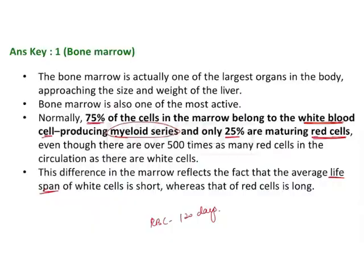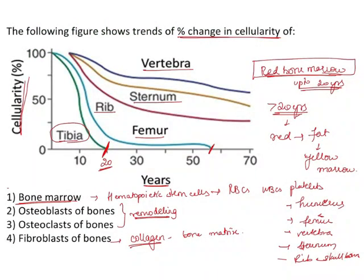Therefore, the right answer is bone marrow — it depicts the change in cellularity of the bone marrow of various bones such as tibia, femur, rib, sternum, and vertebra with age.